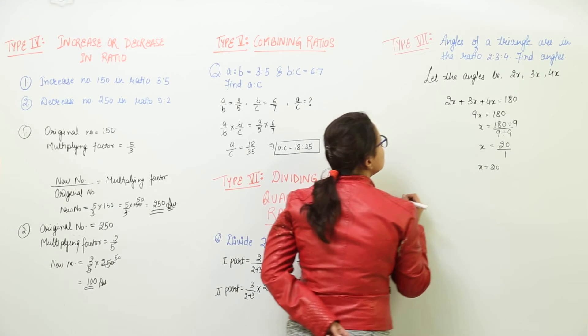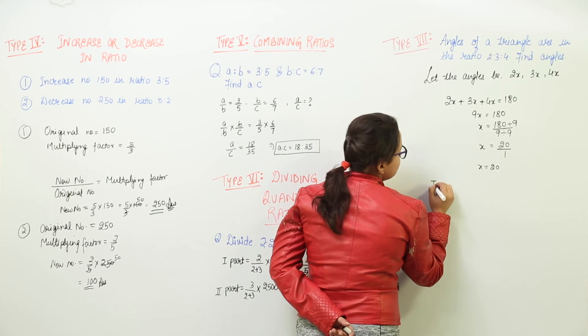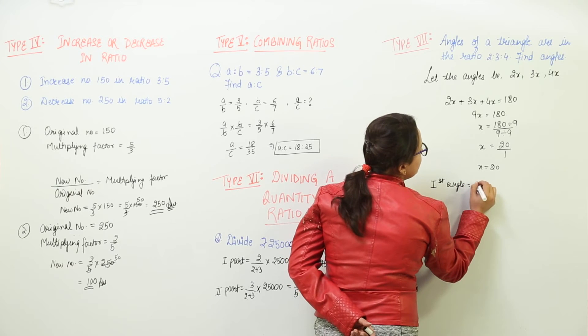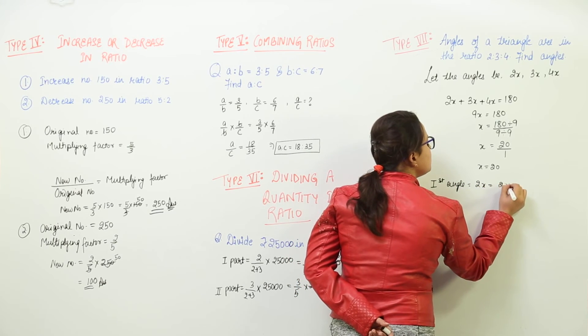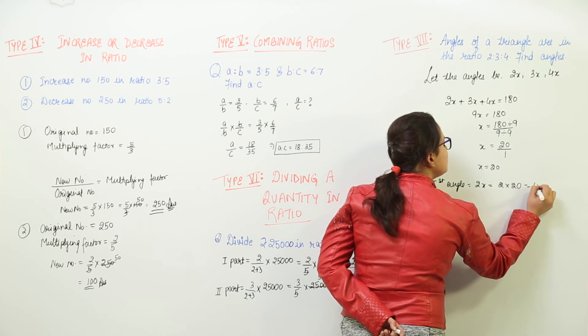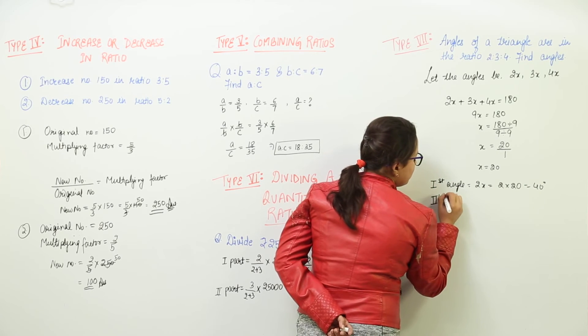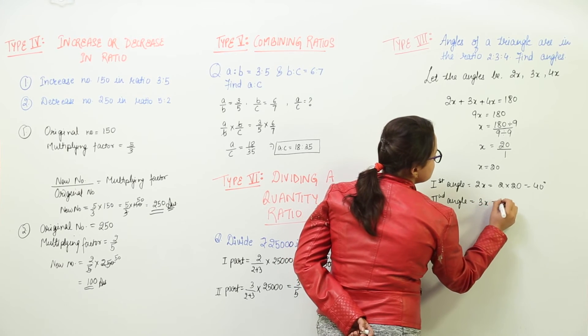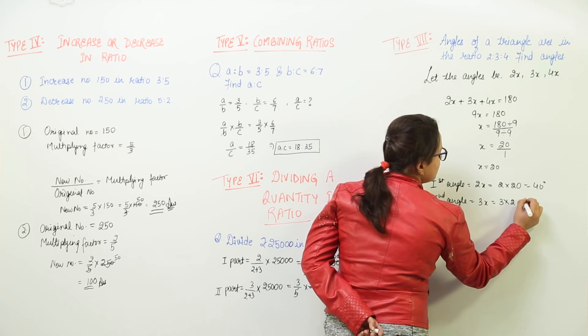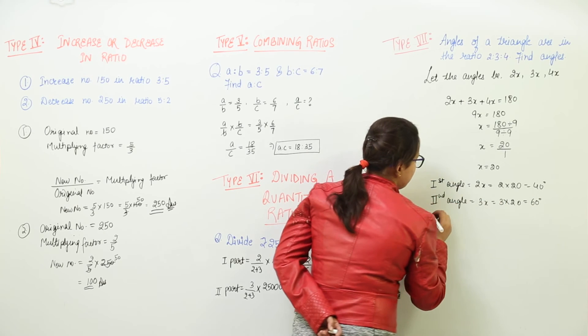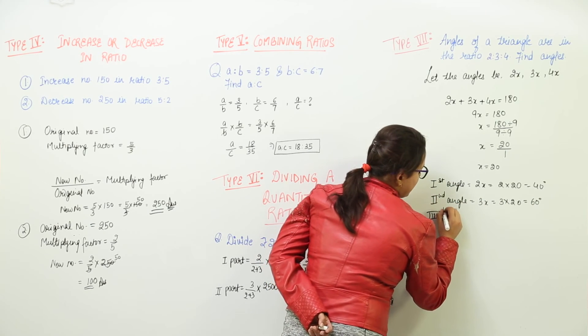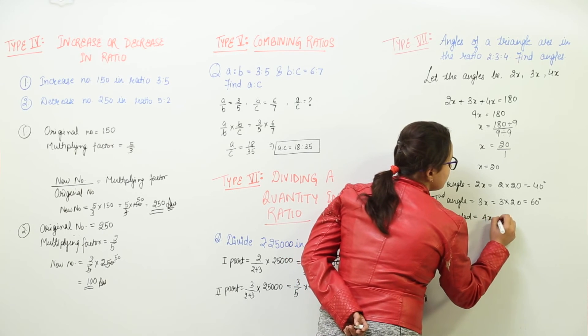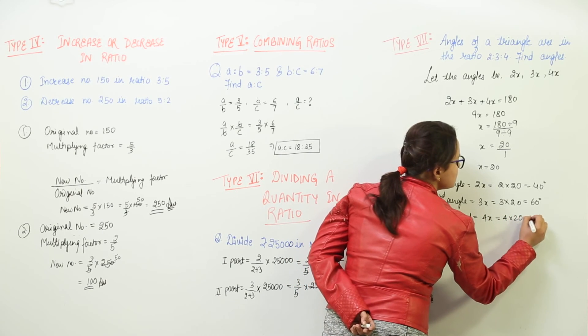Now we can write the value of the angles. The first angle equals 2x, that is 2 times 20, which makes 40 degrees. The second angle is 3x, which is 3 times 20, giving 60 degrees. And the third angle, 4x, would be 4 times 20, giving us 80 degrees.